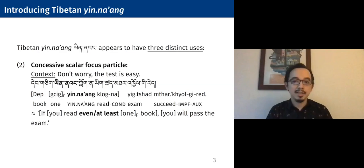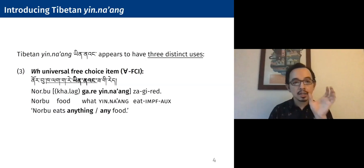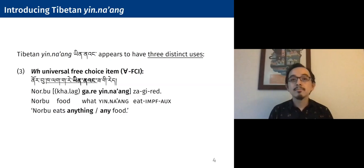And third, yinang takes some kind of WH expression and forms universal free choice items. So we can say norbu kara kare yinang sagire — 'Norbu eats any food' or 'anything.'